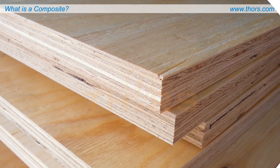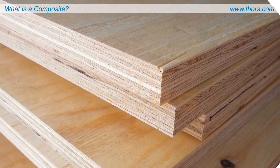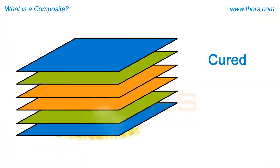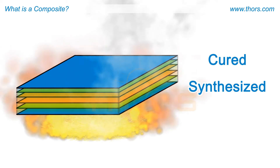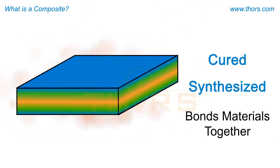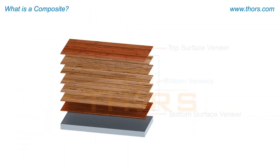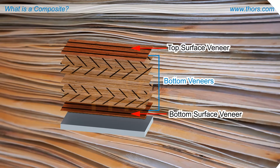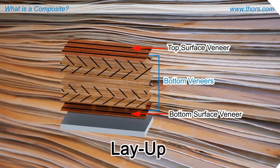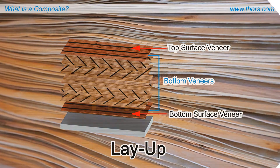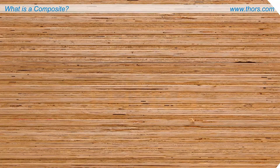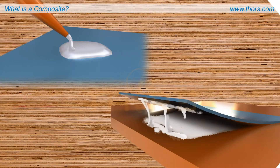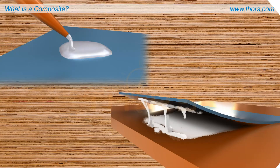An example of a manufactured composite is plywood. Manufactured composites use fibers and a matrix that are cured or synthesized, which is a chemical process that bonds the fibers together. In processed plywood, the fibers are veneers. The veneers are oriented in different directions, known as layup, for strength and stiffness. Adhesives in plywood are the matrix that bonds the veneer fibers together, which are then processed or cured to produce a composite material that is used for different purposes.